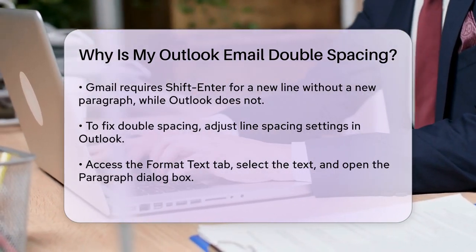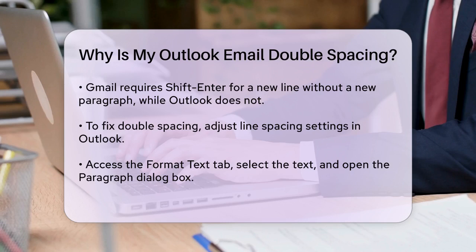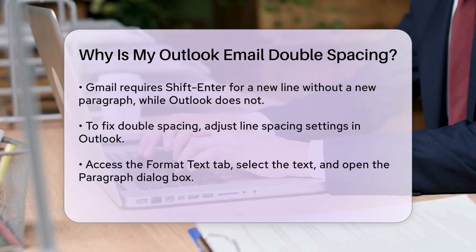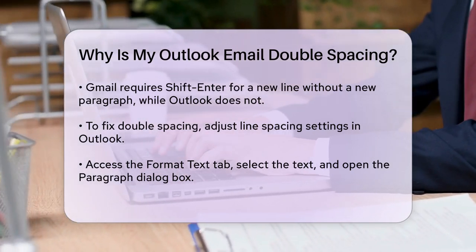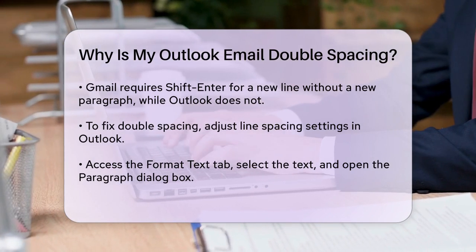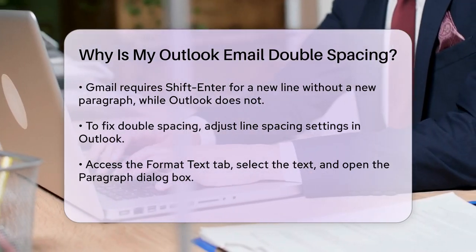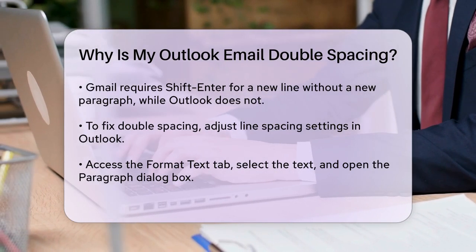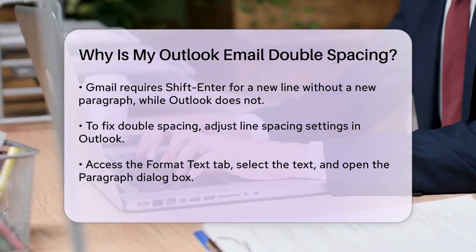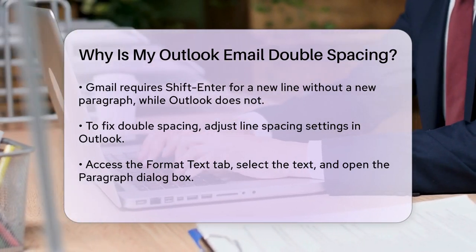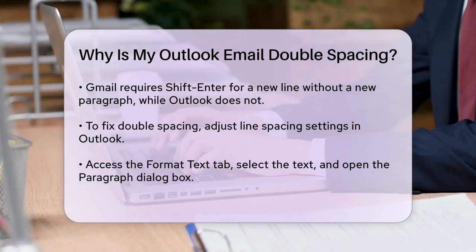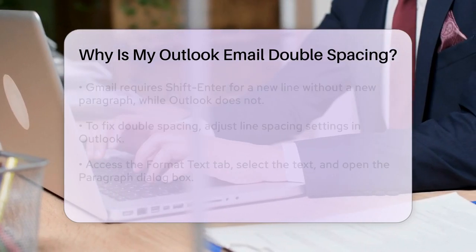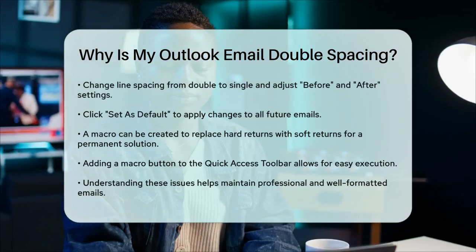To fix this, you can adjust the line spacing settings in Outlook. Open a new email, select the text with double spacing, and go to the Format Text tab. Click on the small arrow in the Paragraph section to open the Paragraph dialog box. Here, you can change the line spacing from double to single and adjust the before and after settings to control the spacing between paragraphs.